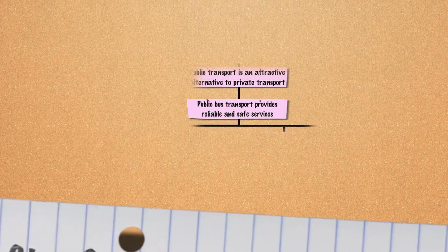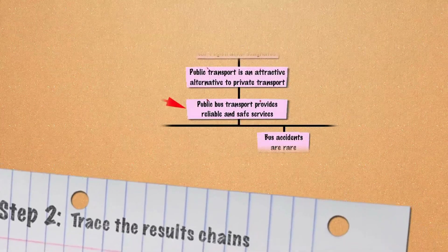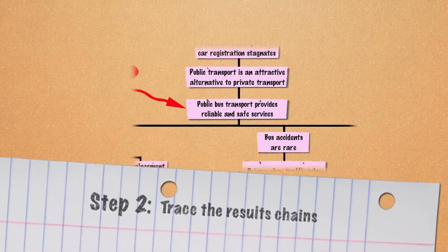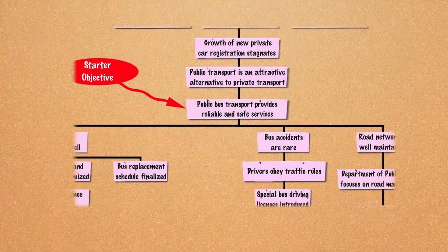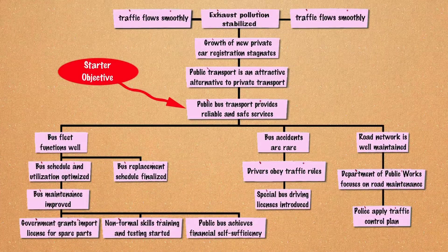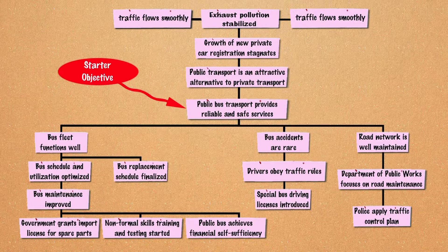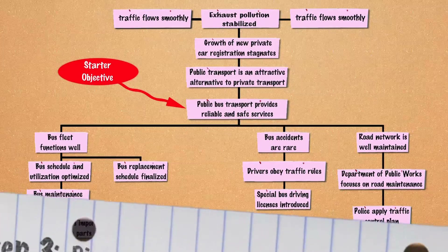Step 2: Trace the results chains. With the desired target objective, identify the means and chains leading to the chosen outcome.